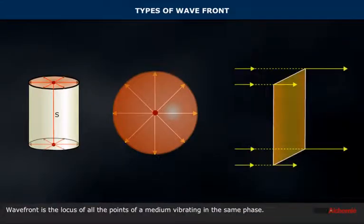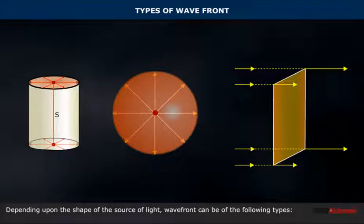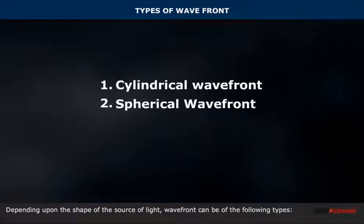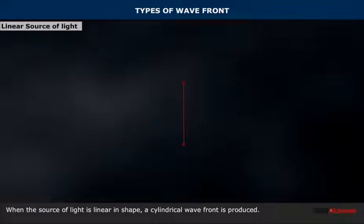A wavefront is the locus of all the points of a medium vibrating in the same phase. Depending upon the shape of the source of light, a wavefront can be of the following types: cylindrical wavefront, spherical wavefront, and plane wavefront.